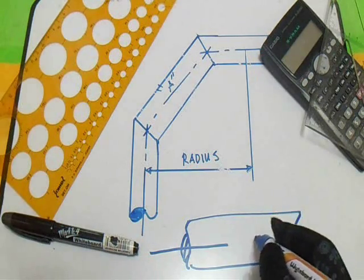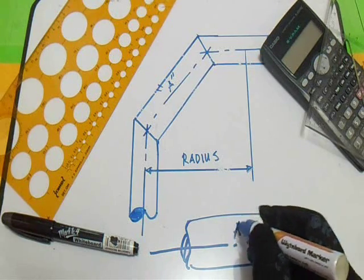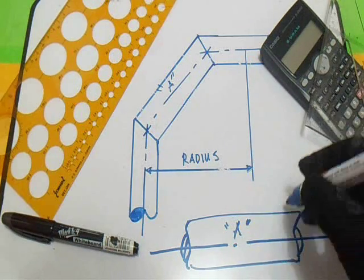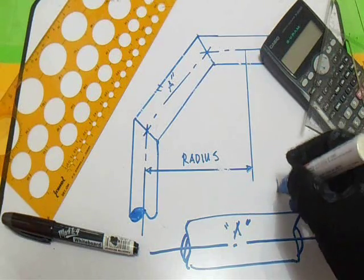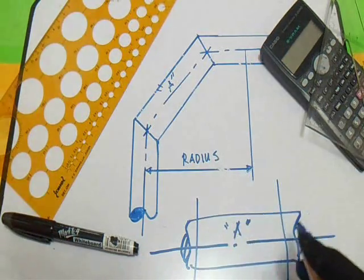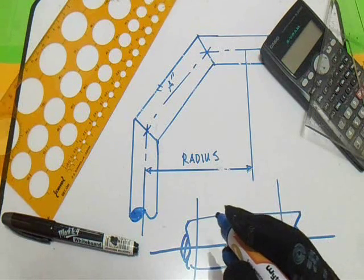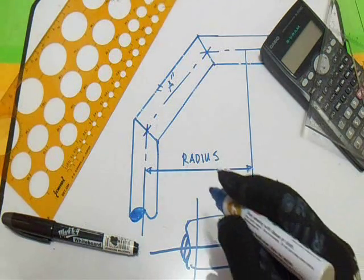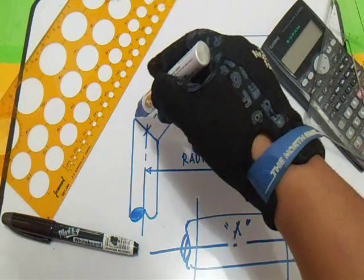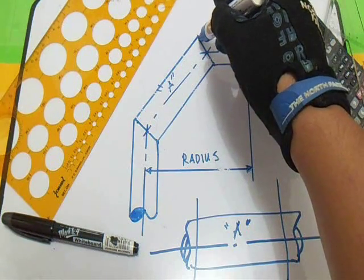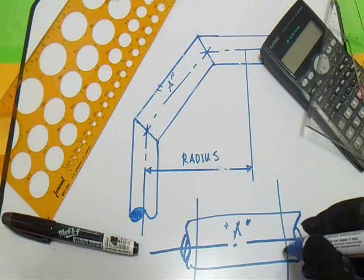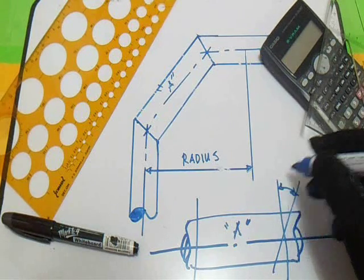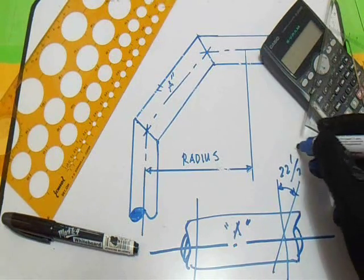We have to have a center line here, and we will also put the dimension here. Our cut for this 3-piece is 22.5 degrees because of this 45-degree turn. Our cut here is like this — this is the 22.5-degree turn.